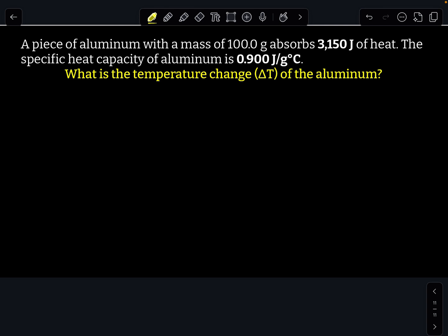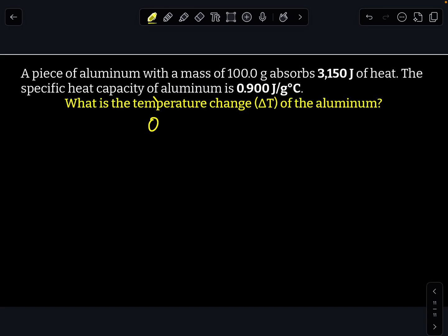So this one's a little bit different, because we're not actually solving for q, we're solving for a different variable. So all that means is we need to manipulate our equation a little bit. So first I'm going to write out my equation, q equals mc delta t.